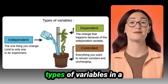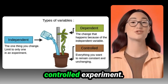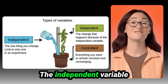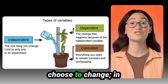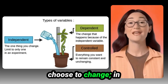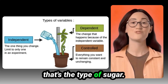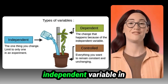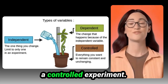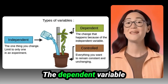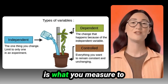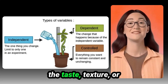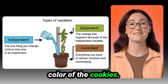Let's talk about the different types of variables in a controlled experiment. The independent variable is the one thing you choose to change. In our cookie example, that's the type of sugar. There can only be one independent variable in a controlled experiment. The dependent variable is what you measure to see the results — maybe the taste, texture, or color of the cookies.